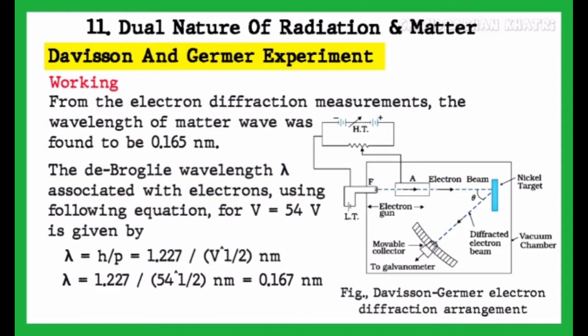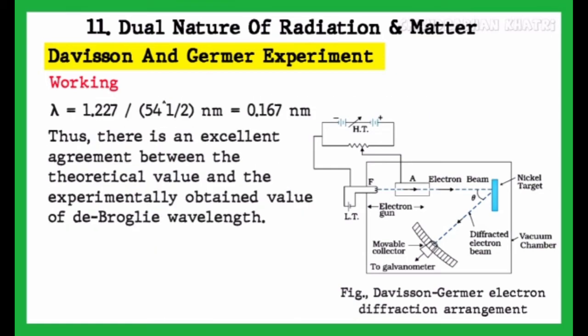After putting the value of voltage, lambda equals 1.227 upon root 54 nanometer, which equals 0.167 nanometer.